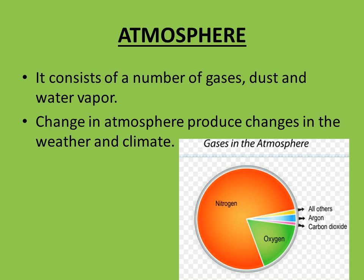Atmosphere comprises a number of gases, dust, and water vapour. As seen in this diagram, nitrogen, oxygen, carbon dioxide, argon, and other gases are found in the atmosphere. Changes in the atmosphere cause changes in weather and climate — for example, air pollution has caused changes in rainfall patterns, and acid rain is a consequence of air pollution.